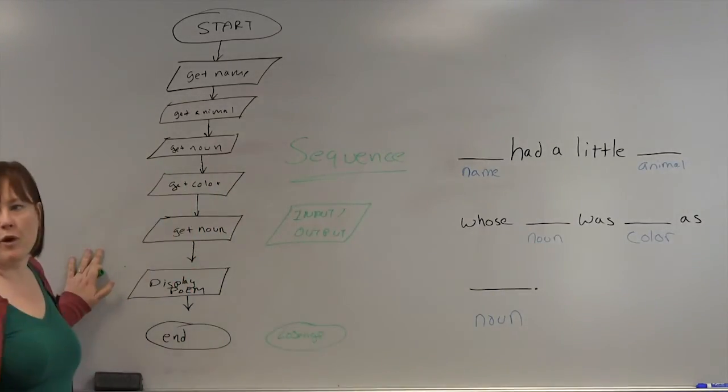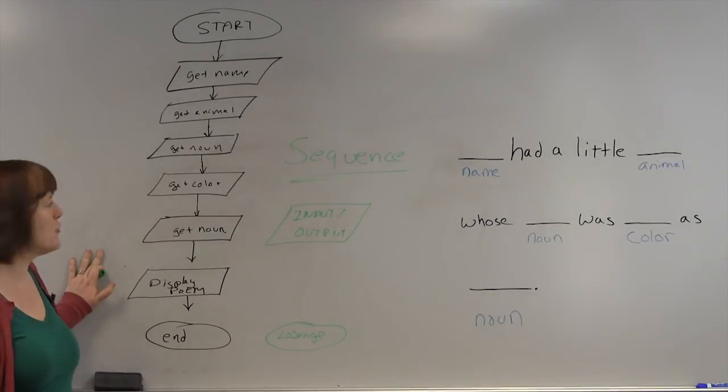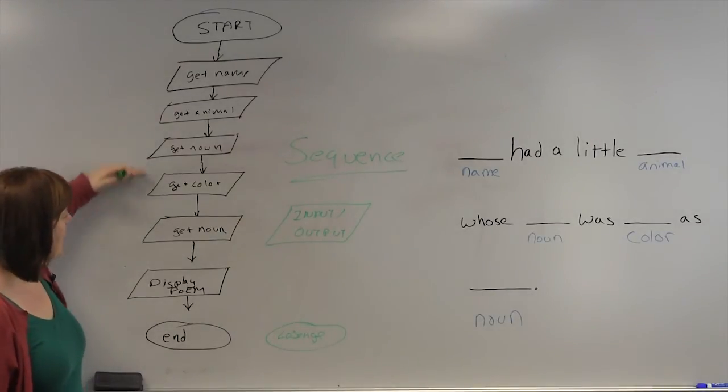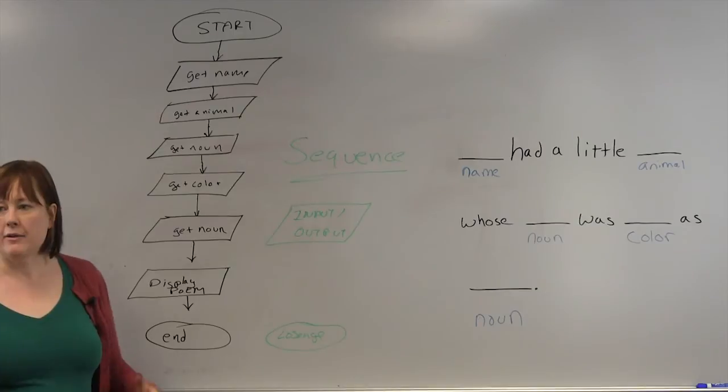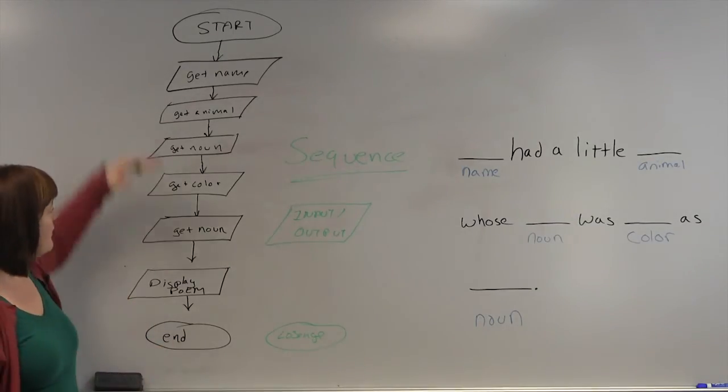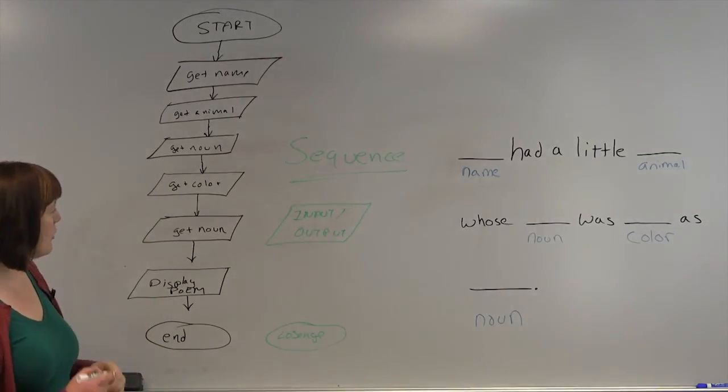And that just means doing one thing after the other. It's one of the most basic structures in programming. So this is just having us sequentially do things until we get to the end. And so this is what the flowchart looks like.